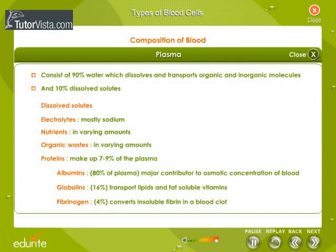About 55% of blood is plasma, and about 90% of plasma is water. Plasma also contains vitamins, minerals, nutrients, proteins and waste products. In the bloodstream, plasma acts as the mode of transportation for blood cells.